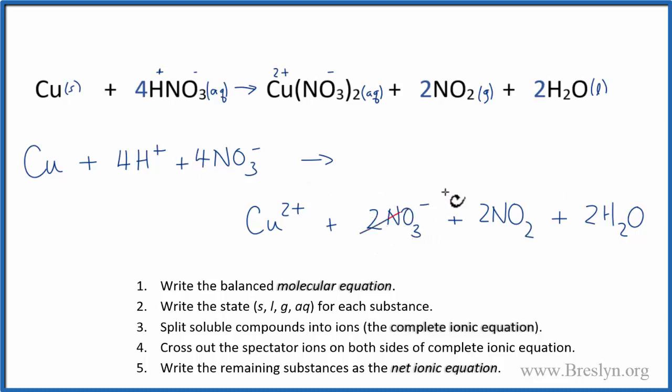So what we'll do, we'll cross out these 2 here, and then we'll get rid of the 4 and put a 2. So we really only have a net of 2 nitrate ions. There's really nothing else we can cancel out, so that's it.